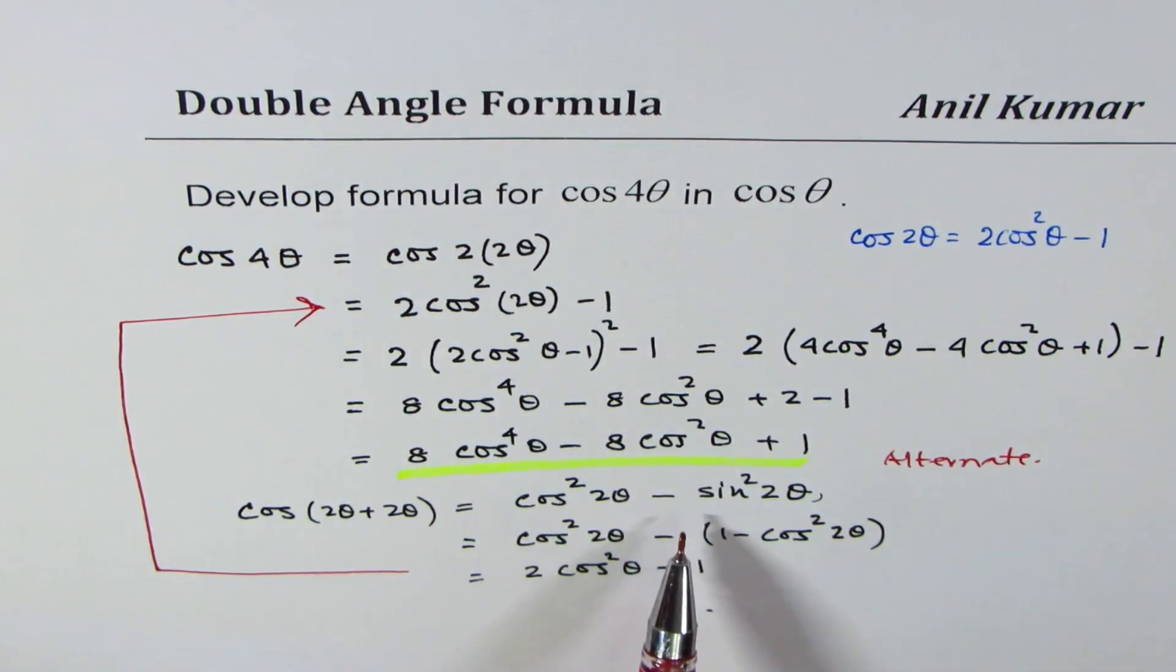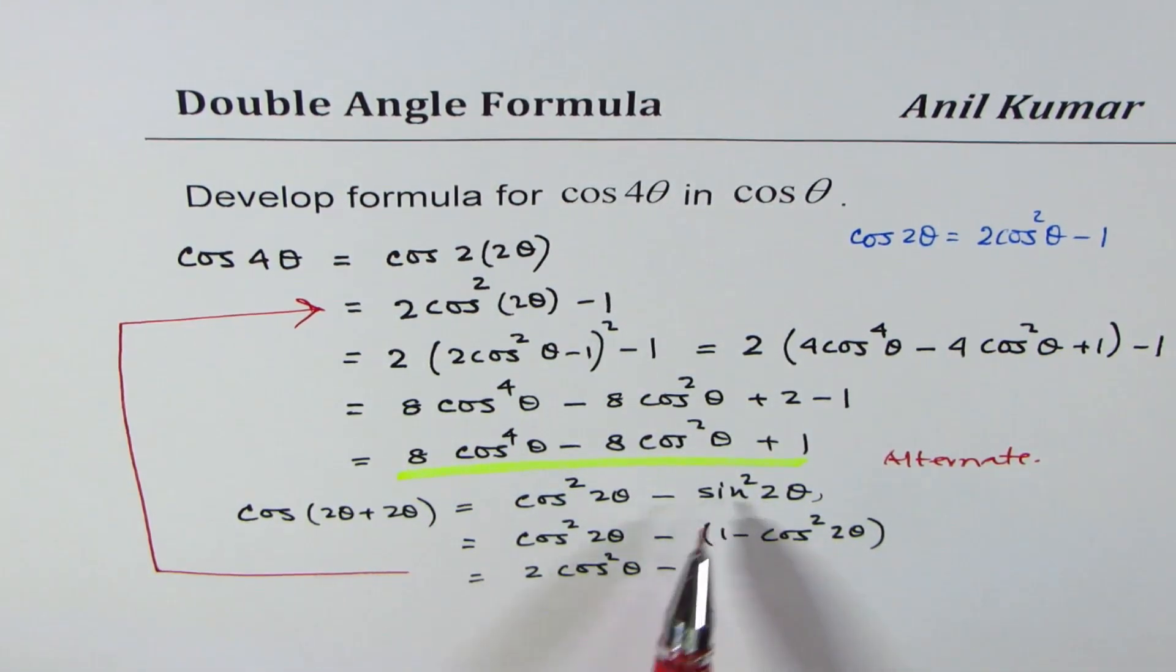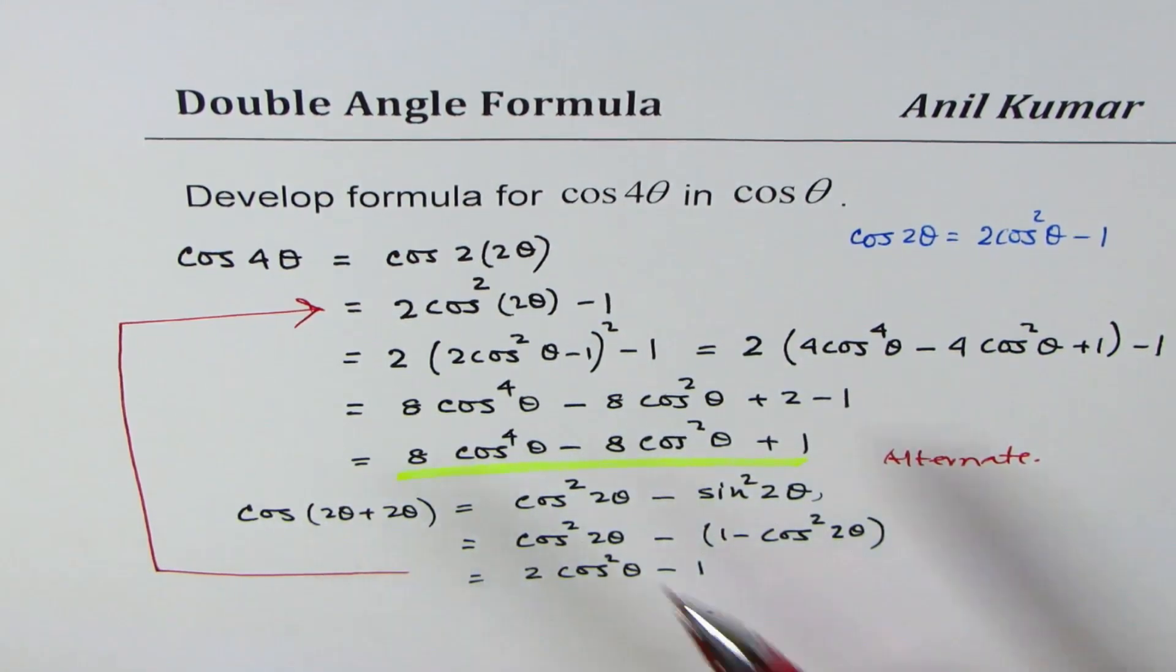So if you use that formula for cos 4θ, then you may have to do these three extra steps. I hope that helps and this method is probably more efficient.